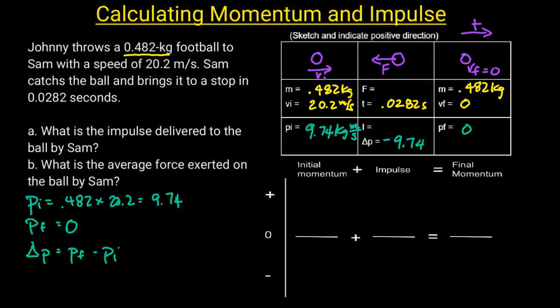And that makes sense because the momentum has decreased — negative 9.74 kilogram meters per second. The impulse will be the same number because of the impulse-momentum theorem. I'm going to use Newton-seconds for impulse.